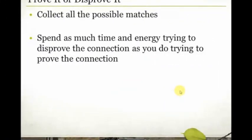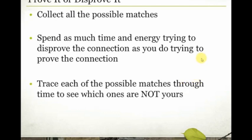That takes us to the third point for the day: trace the possible matches through time to see which ones are not yours — which ones can you eliminate. If you know, for example, that your John Smith had 13 children, and you trace some of those other John Smiths down to wills or property records and discover that one of them only had four children, or one had six sons while your guy had only two sons and the rest were daughters — those are the kinds of clues you're looking for to help you disprove the relationship between the possible matches and the one you're looking for.